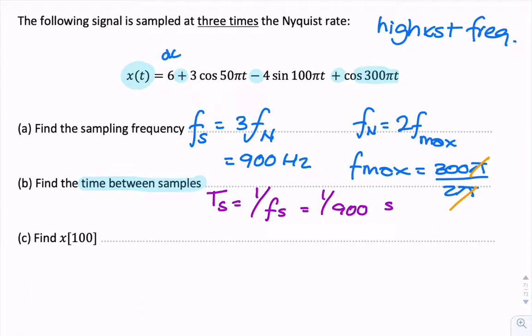Now, to find part C, that's the 100th sample. So, we would have to rewrite X of t as a discrete time signal.